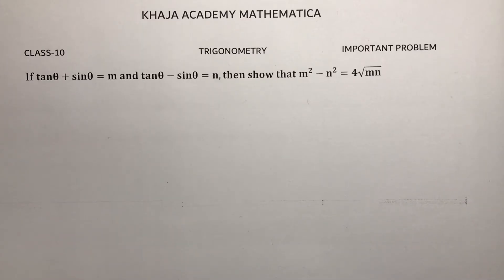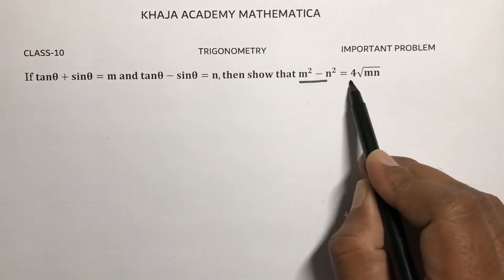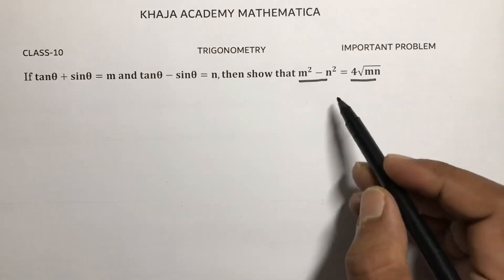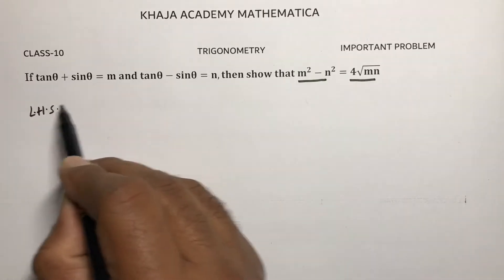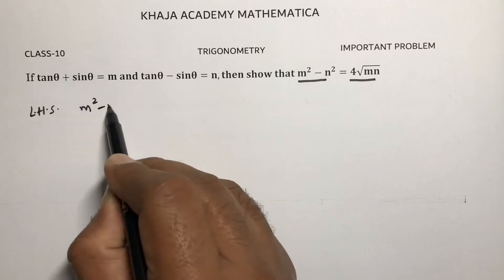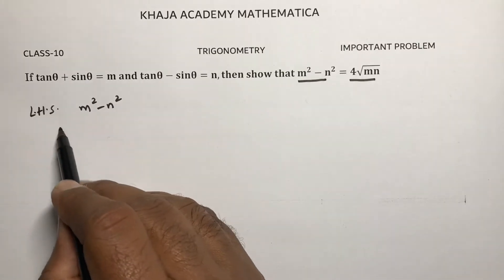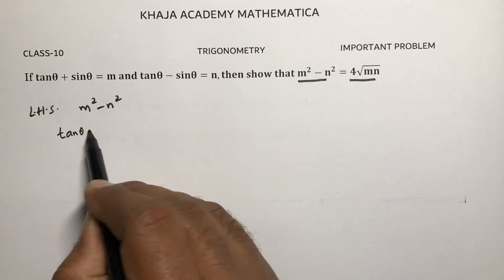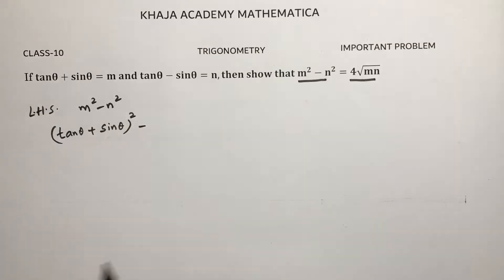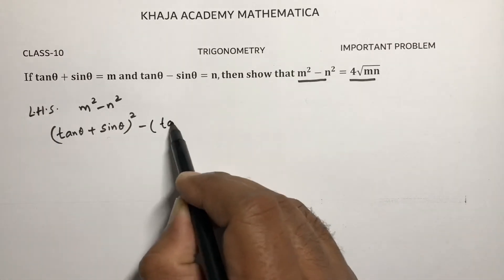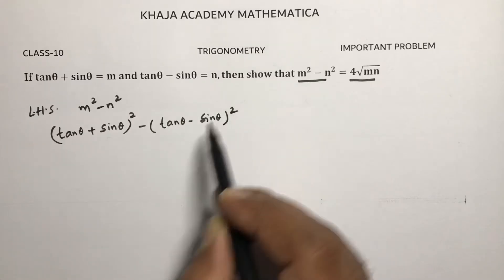They gave the m value and n value. If you do LHS and RHS separately, you will get the answer easily. So first, take LHS, that is m squared minus n squared. m value is tan θ plus sin θ whole square, minus n which is tan θ minus sin θ whole square.